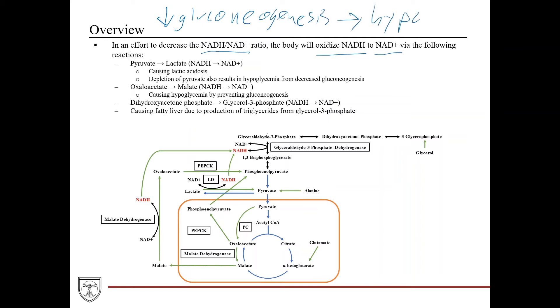which can result in hypoglycemia. So high levels of alcohol metabolism can cause gluconeogenesis, which then results in hypoglycemia because you've depleted the liver's ability to synthesize glucose that can be available for peripheral tissues.